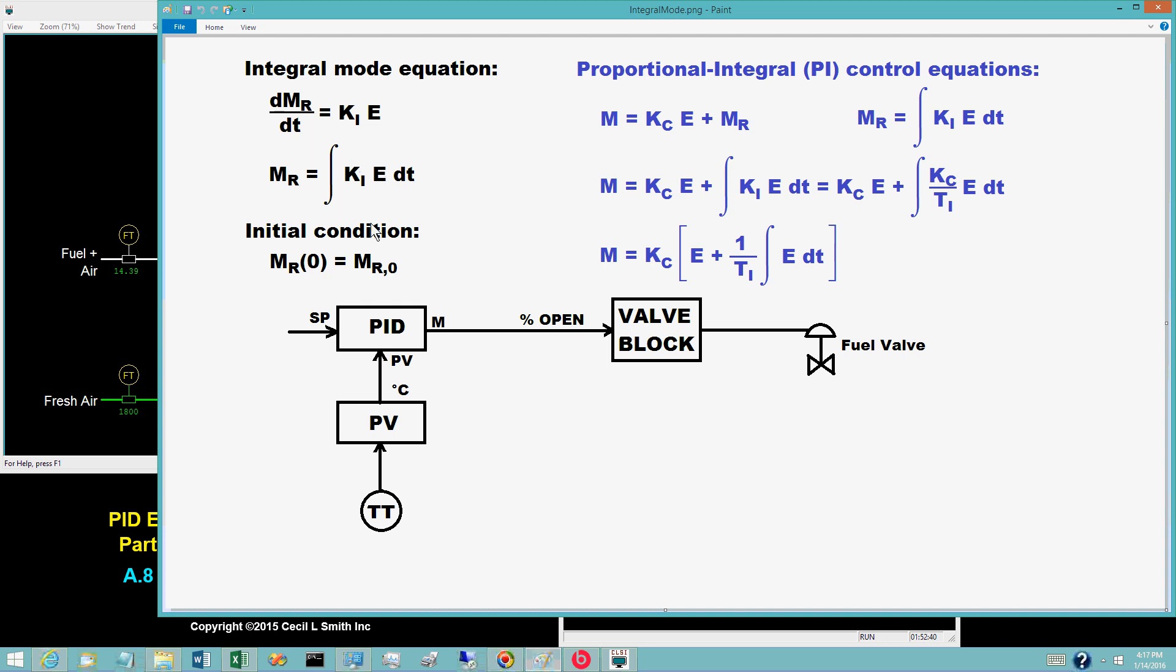But let's be clear, the presence of the integral mode does not assure that a loop will line out. But if it does line out, the PV will be equal to the set point.